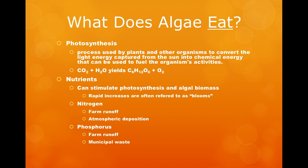The two most important nutrients when talking about algae and algal blooms are nitrogen and phosphorus. Nitrogen is added to the system through farm runoff or by atmospheric deposition due to acid rain. Phosphorus is added to the system mainly through farm field runoff, but also from municipal waste.